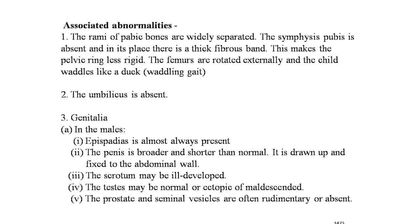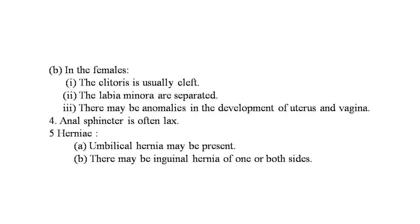Associated abnormalities: the rami of the pubic bones are widely separated, the symphysis pubis is absent and in its place there is a thick fibrous band. This makes the pelvic ring less rigid. The femurs are rotated externally and the child waddles — called waddling gait. The umbilicus is absent. In males, epispadias is almost always present; the penis is broader and shorter than normal, drawn up and fixed to the abdominal wall; the scrotum may be ill-developed; the testes may be normal or ectopic/mal-descended; the prostate and seminal vesicles are often rudimentary or absent. In females, the clitoris is usually cleft, the labia minora are separated, and there may be anomalies of the uterus and vagina.